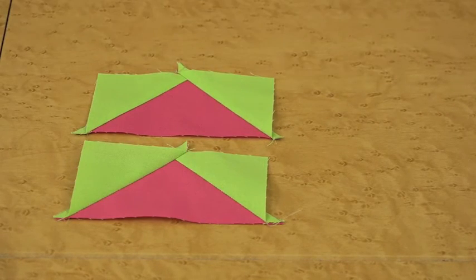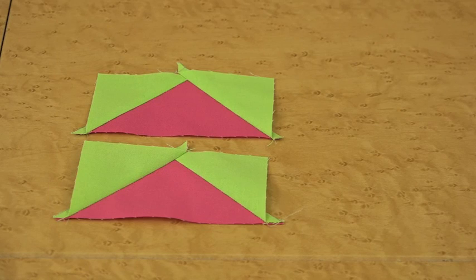Then we're going to use our remaining pieces to make two more flying geese units, so you'll have a total of four from this technique.